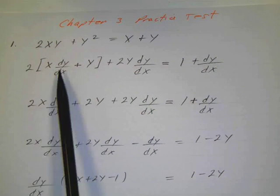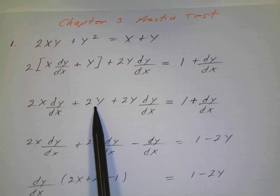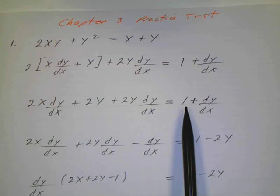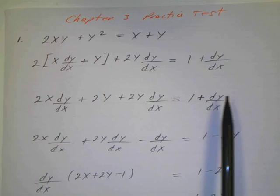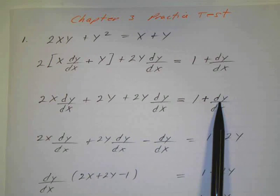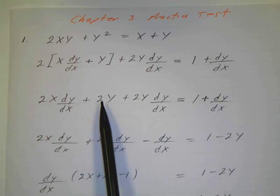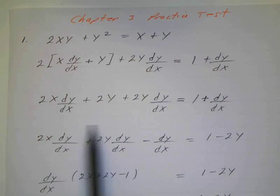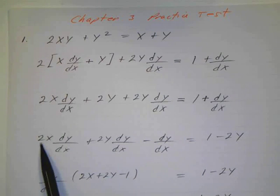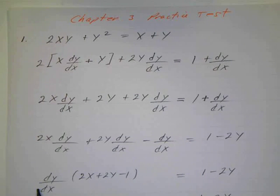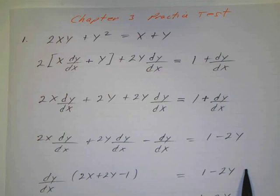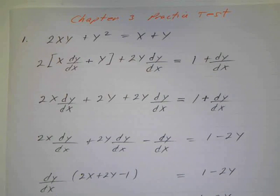We multiply through: 2x dy/dx plus 2y, then plus 2y dy/dx, and that equals 1 plus dy/dx. Then get all dy/dx terms on the left — subtract that and the 2y from both sides. Factor out dy/dx; what's left is 2x plus 2y minus 1, equals 1 minus 2y. Then divide both sides by that trinomial, 2x plus 2y minus 1.